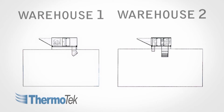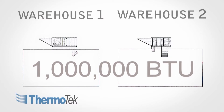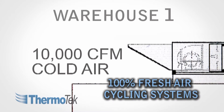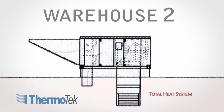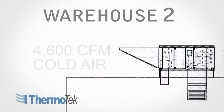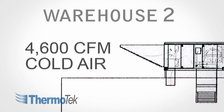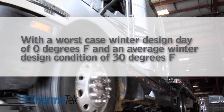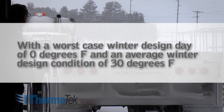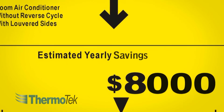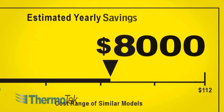Let's compare two warehouse facilities in an energy analysis, both requiring 1 million BTU of heating. Warehouse 1 is being heated by a 100% fresh air high temperature cycling system. Warehouse 2 is being heated by a total heat recirculation system. As you can see, warehouse 2 requires far less cold fresh air to heat in order to meet space demands. With a worst-case winter design day of 0 degrees Fahrenheit and an average winter design condition of 30 degrees Fahrenheit, this equates to over $8,000 in annual gas consumption savings alone for a single unit.